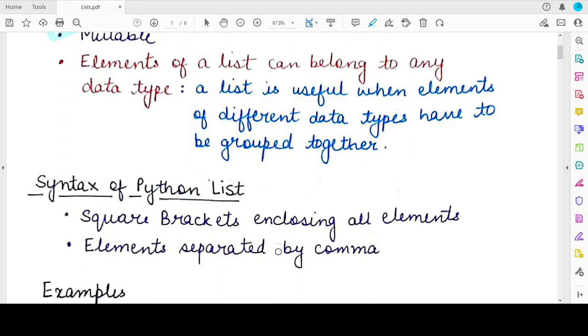Now what is the syntax of a Python list? To declare or to define a Python list, you need to write down two square brackets. And inside those brackets, you need to specify the elements. And those elements, if there are more than one elements, they will be separated by a comma.